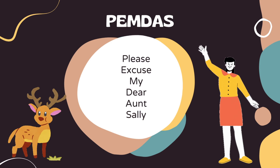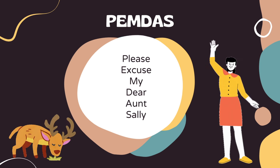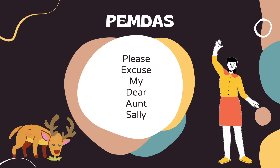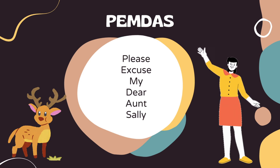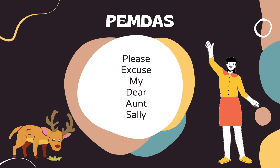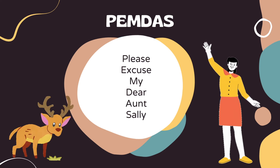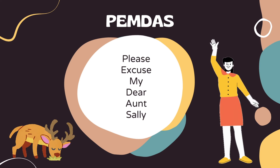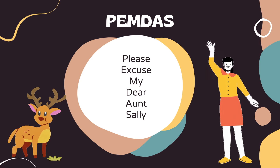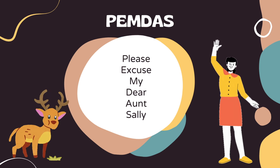The order of operations tells us the order that we're supposed to perform the operations. We can use the acronym PEMDAS to help us remember: first we do parentheses, then exponents, then multiplication or division whichever comes first reading left to right, and finally addition or subtraction whichever comes first reading left to right.